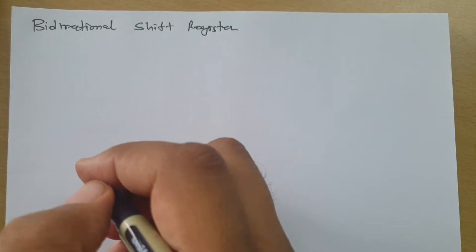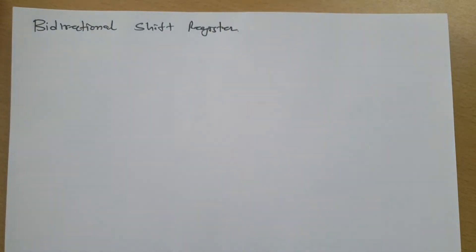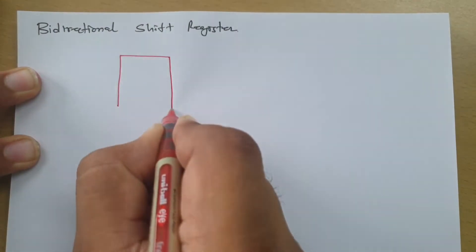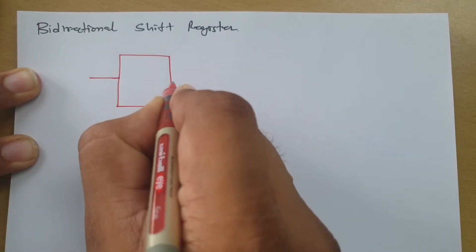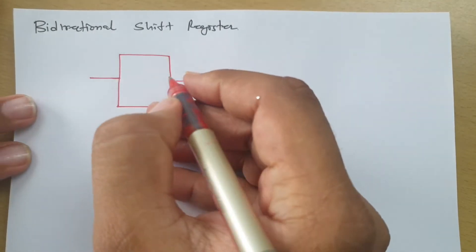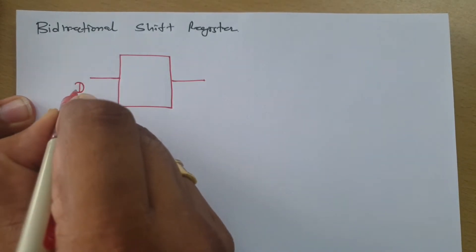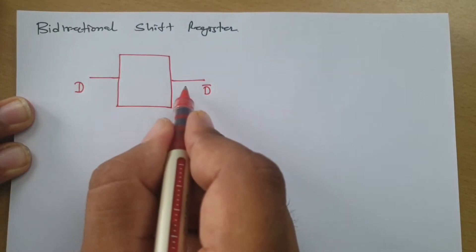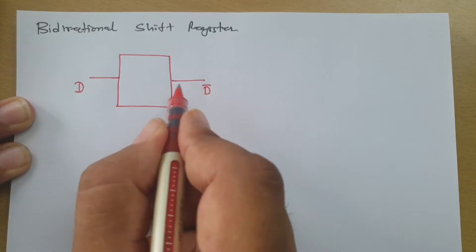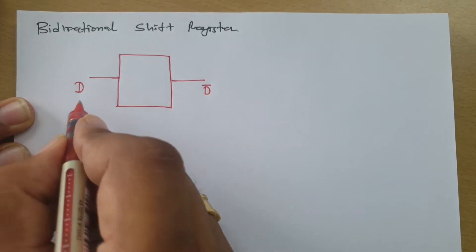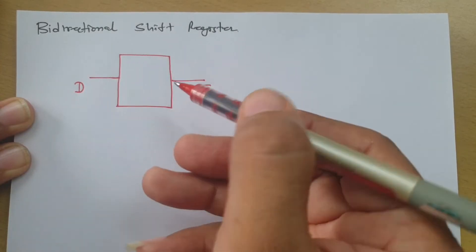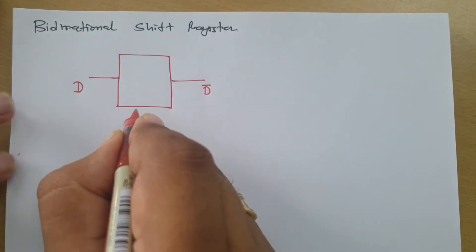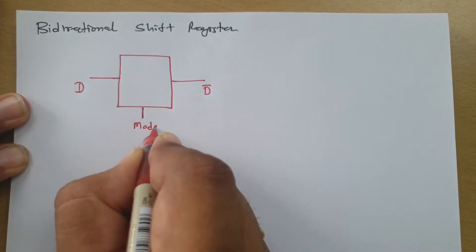If you see the basic block of a bi-directional shift register, we have two terminals. One terminal is on one side and one is on the other. If this is my input, then D' should be my output, meaning shifting is happening in this direction. And if D' is my input, then D should be my output, as data is shifting in the other direction. That shifting will get decided by mode control, M.